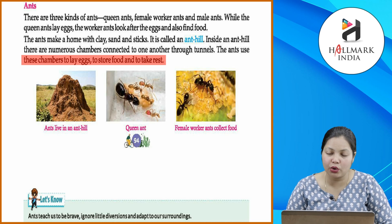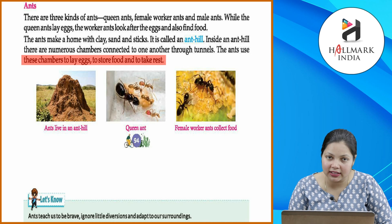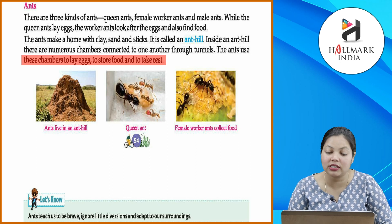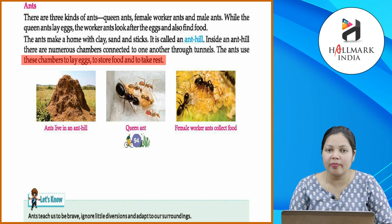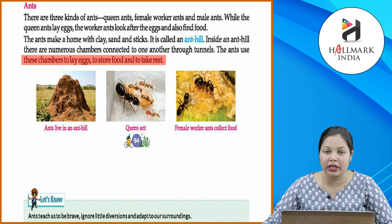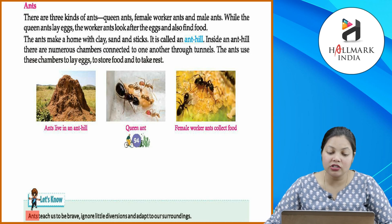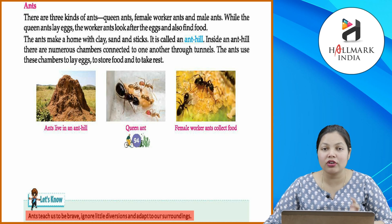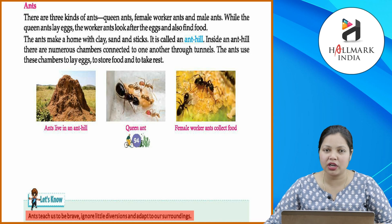Ants jo hoti hain, wo teen types ki hoti hain: ek hoti hai queen ants, doosri hoti hai female workers, aur teesri male ants. Queen ants eggs deti hain aur female worker ants food lekar aati hain. Ants apna ghar bhi banati hain clay se, sand se, stick se — ise ant hill bolte hain. Ant hill mein bahut saare chambers hote hain aur tunnels hoti hain jinke through ants easily move kar paati hain. Ants humein sikhati hain ke hamesha brave rehna chahiye, apni little diversions ko ignore karna chahiye aur jaisi bhi surrounding ho, use adopt karke rehna chahiye.